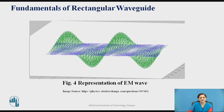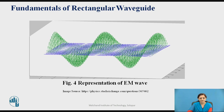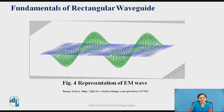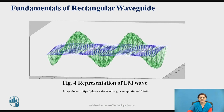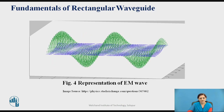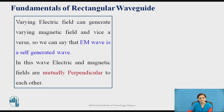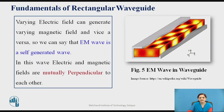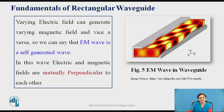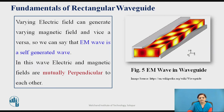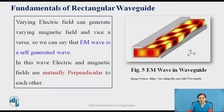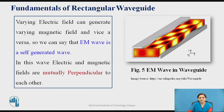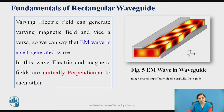Consider this electromagnetic wave. The electric field and the magnetic field are perpendicular to each other, and this wave is to be transmitted through the rectangular waveguide. When it transmits through the rectangular waveguide, a varying electric field is generated, and this varying electric field generates a varying magnetic field, thus producing the electromagnetic wave. Therefore, no external source is required — the electromagnetic wave is a self-generated wave.